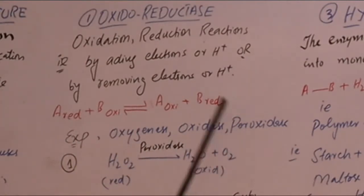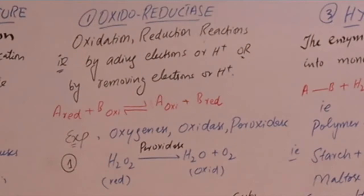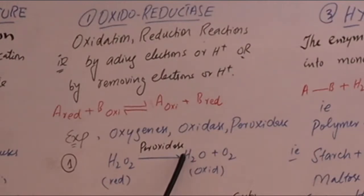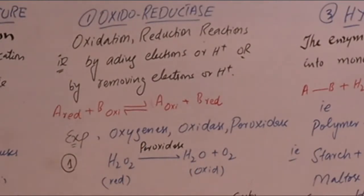Examples include oxygenases and oxidases. One example: hydrogen peroxide is a poisonous chemical produced inside the cell during metabolism. To break it down via oxidation-reduction, the enzyme peroxidase is used. Due to peroxidase, hydrogen peroxide (in reduced form) is converted into water and oxygen (oxidized form).